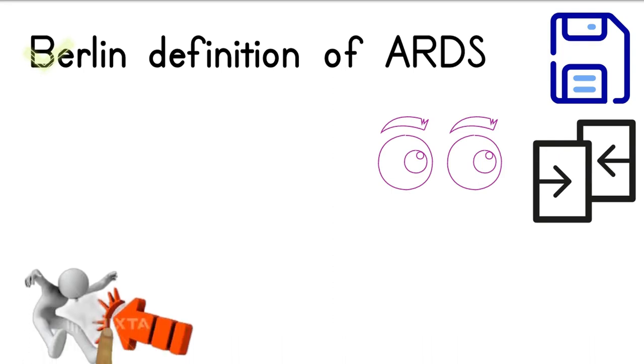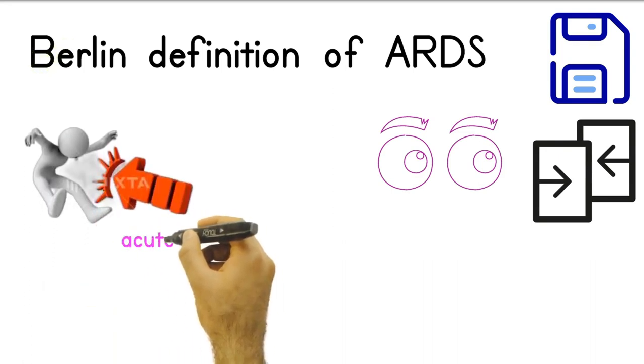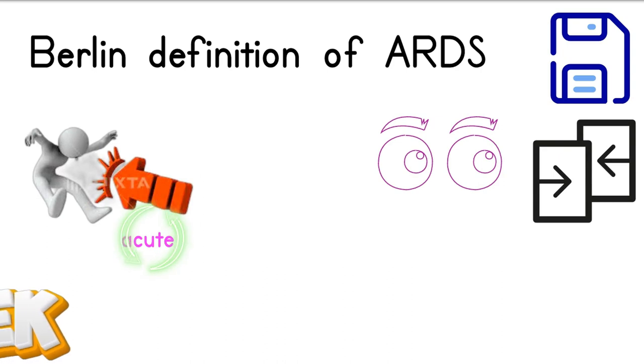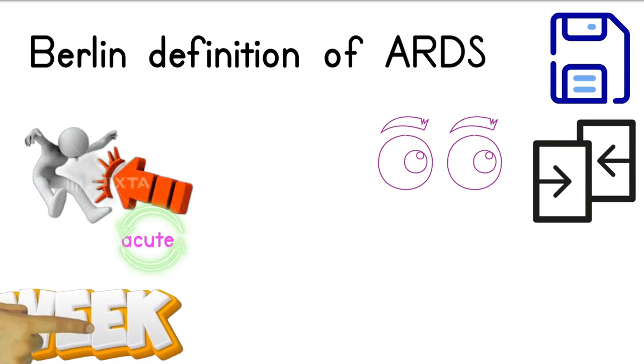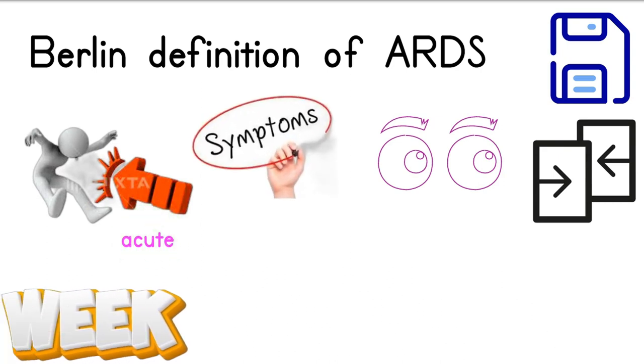Acute - the onset of the acute respiratory syndrome, or ARDS, should be within a week of a known clinical insult. So there will be new symptoms or worsening of the previous respiratory symptoms, such as shortness of breath or respiratory distress.